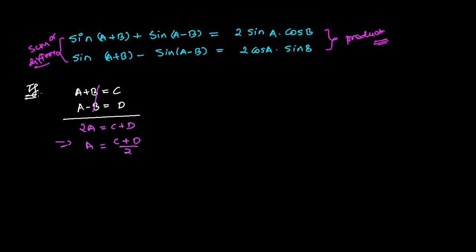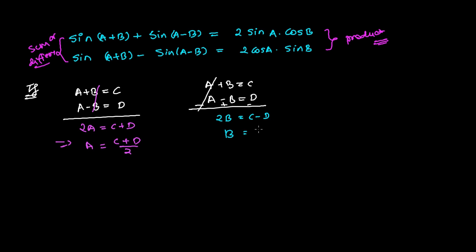Similarly, if we subtract these two equations — a plus b equals to c and a minus b equals to d — for subtracting we need to change the sign. So the a terms cancel and we're left with twice of b, which equals c minus d. So our b is going to be (c minus d) over 2. Keep these two things in mind: a is (c plus d)/2 and b is (c minus d)/2.